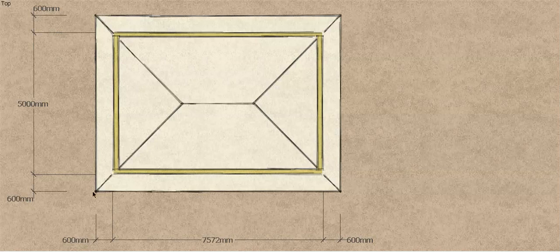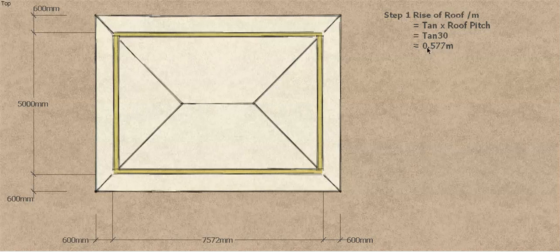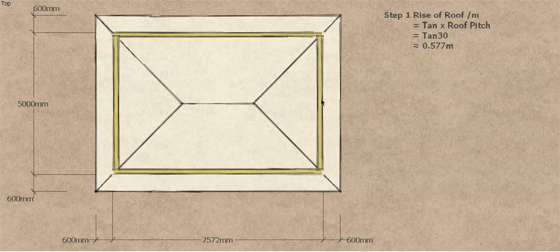We're trying to work out the rough length for estimating purposes of the hip — that's that member there — and of course there are four of them on this roof. The first thing we need to know is how far the roof rises. I'm going to work on a meter basis, so we work out the rise of the roof per meter. All we need to do is take the tan of the roof pitch. In this case, tan(30°) gives you a rise per meter of 0.577 meters.